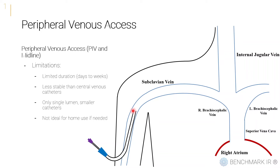Some limitations of peripheral venous access: peripheral IVs are limited to a few days and midlines to a couple of weeks. They're less stable than central venous catheters and are usually only single lumen and smaller, so they can't deliver as high a volume of fluids or medications. Central venous catheters have multiple lumens so you can give more than one medication at a time. Also, peripheral IVs are not ideal for home use — they can come out or get damaged more easily — whereas a central venous catheter is more stable and easier to use for patients at home.